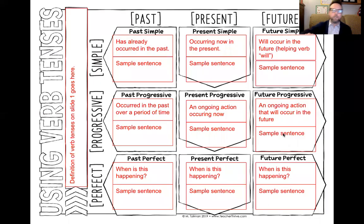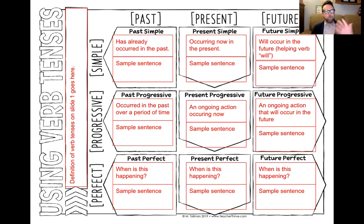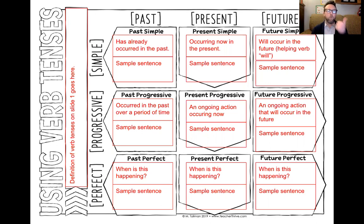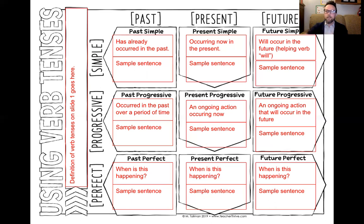Last time we had gone through the progressive verbs — these are verbs that are ongoing actions. A past progressive occurred in the past over a period of time. Present progressive is occurring right now. And then an ongoing action that will occur in the future. For these, we use the different tenses of 'to be': past progressive is 'was' or 'were' plus an ING verb; present progressive is 'am,' 'is,' or 'are' plus an ING verb; and future progressive is 'will be' plus an ING verb.